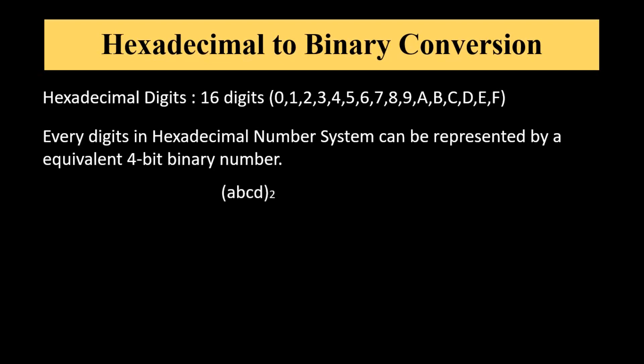Suppose ABCD is a 4-bit binary number. Binary number has base 2. So least significant bit D has a weight of 2 to the power 0, which means 1. C has a weight of 2 to the power 1, which means 2. B has a weight of 2 to the power 2, which means 4, and A has a weight of 2 to the power 3, which means 8.